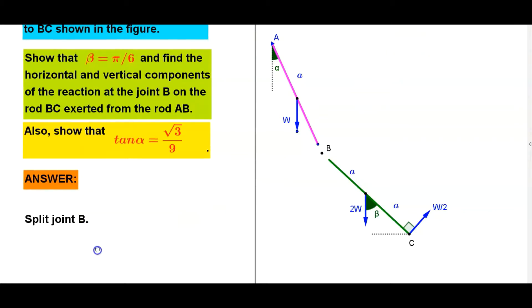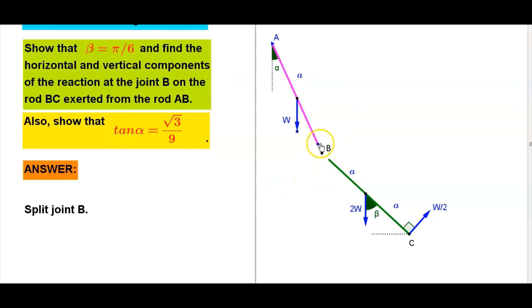Now split the joint B to denote the forces at joint B. This one horizontal direction X, this one opposite direction X. Here vertically downward Y, here vertically upward Y.